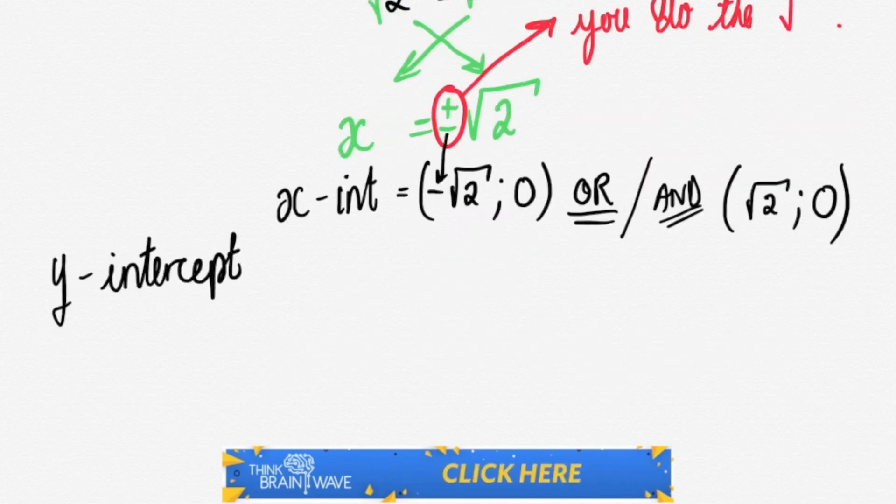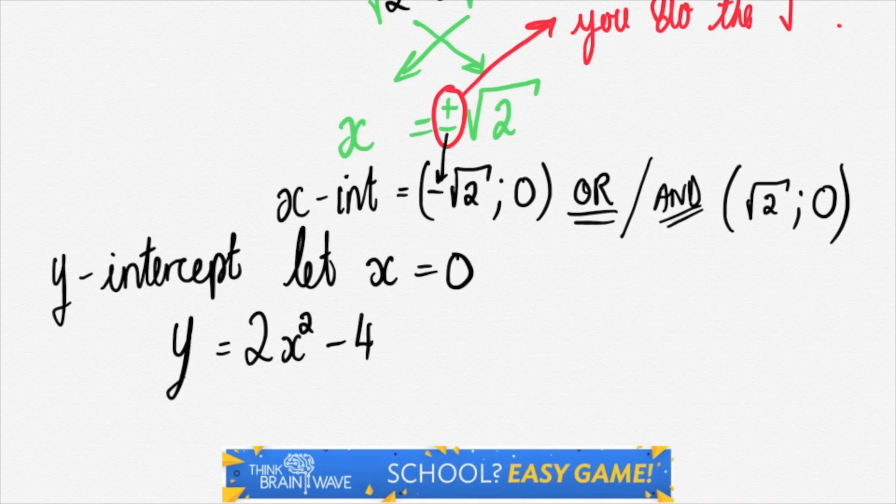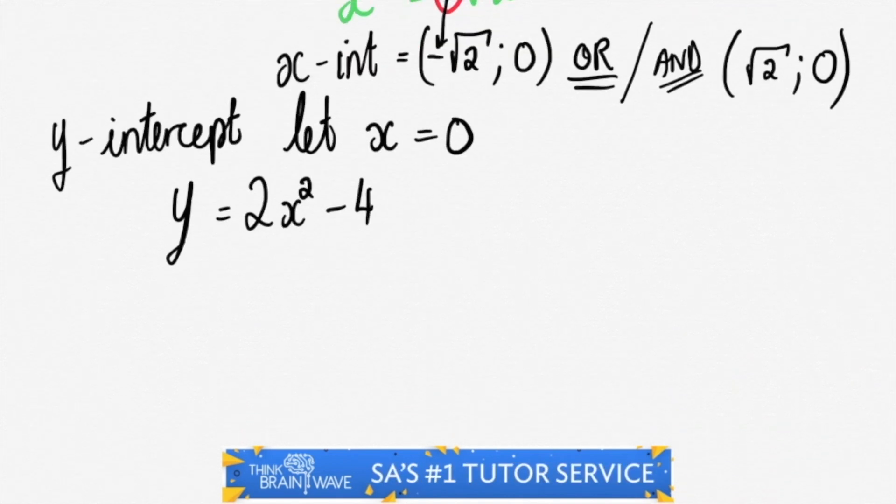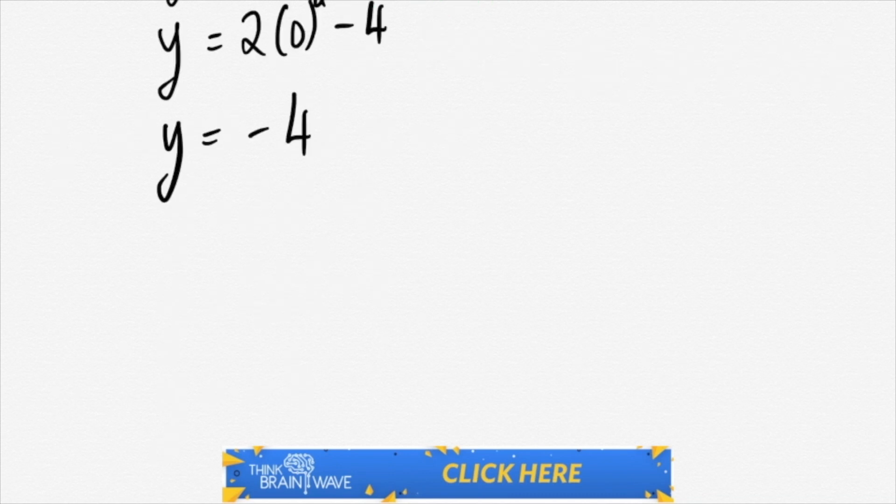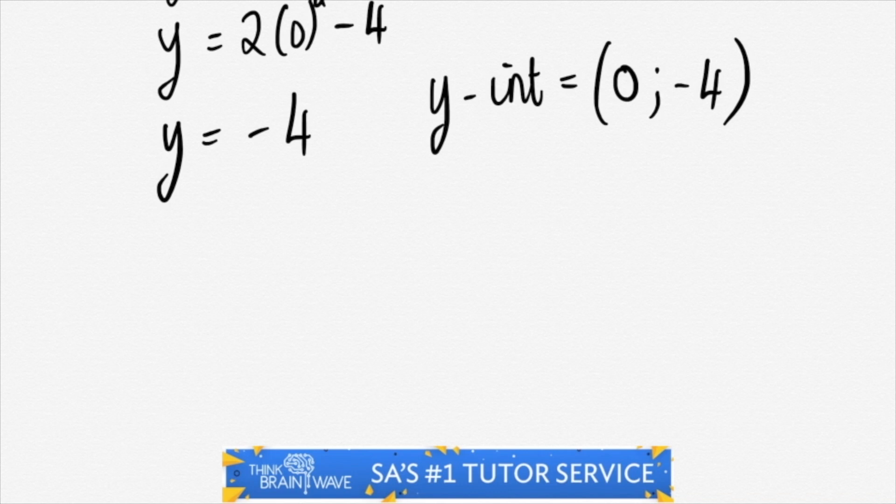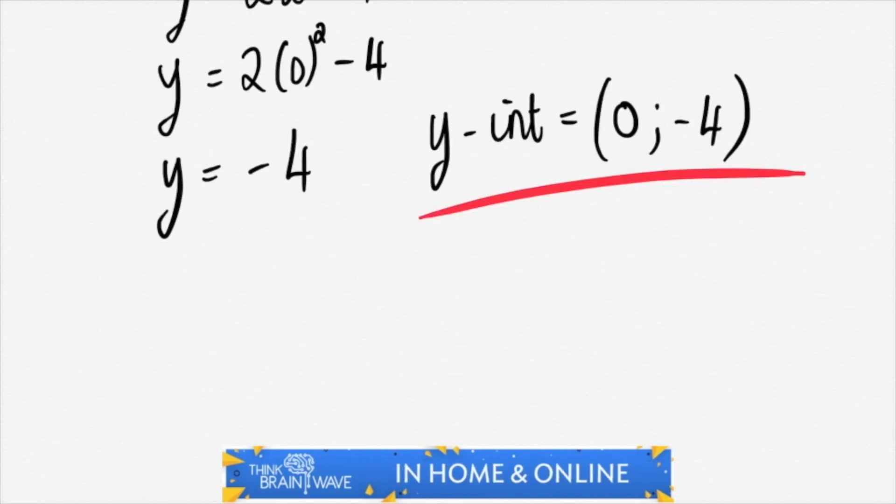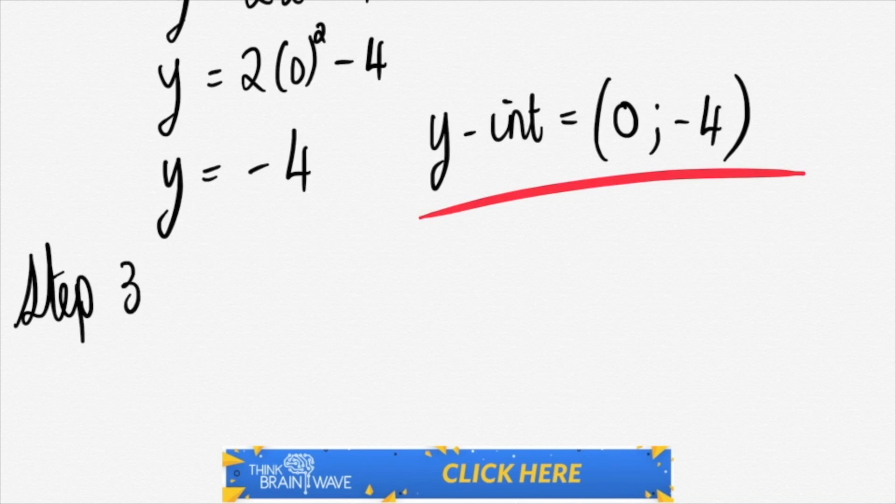Now let's do the y-intercept. Over here we make x equal to 0. First off we write our equation. The equation is f of x is equal to 2x-squared minus 4. Now 2 times 0, any number times 0 is 0, so you're left with 0 minus 4, which is minus 4. So you're left with 0 and minus 4 as your y-intercept. Now as we said earlier, that minus 4 in the equation makes you shift downwards by 4 units and your y-intercept is clearly showing that. So this must be correct.